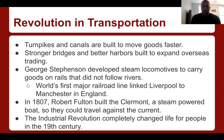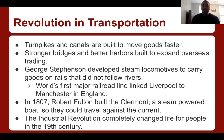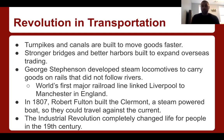Also is the revolution in transportation. Turnpikes and canals are built to move goods faster. That theme — making more of things and making them faster — is what the Industrial Revolution is all about. Stronger bridges and better harbors are built to expand overseas trading. George Stevenson developed the steam locomotive to carry goods on rails that did not follow rivers, so you no longer need rivers specifically to get goods places faster. Now you have steam engine trains able to carry a lot of goods and eventually people from point A to point B across the land, not just waterways.